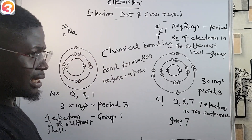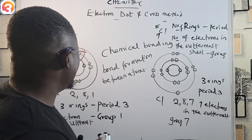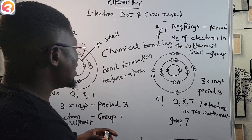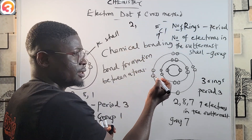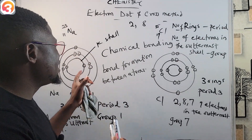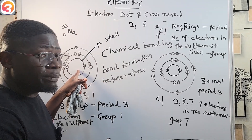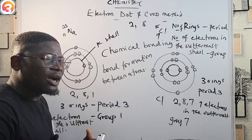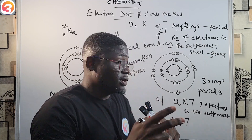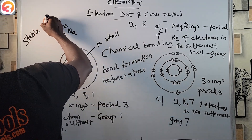Another important point: the first shell, or K shell, can only accommodate 2 electrons, as seen in these diagrams. The next shell can accommodate 8 electrons. An atom that possesses only the first K shell can only accommodate a maximum of 2 electrons. If that atom has 2 electrons in its only shell, it is said to have obtained a stable duplet structure.